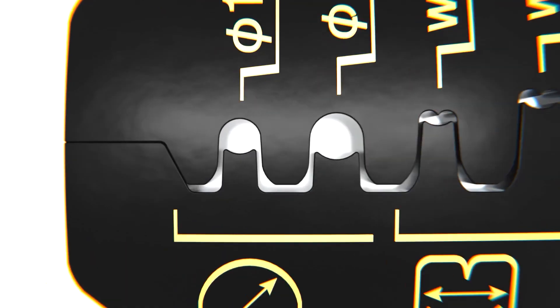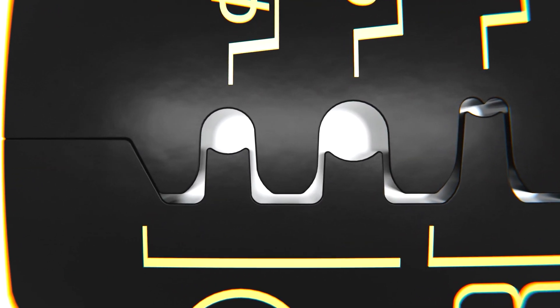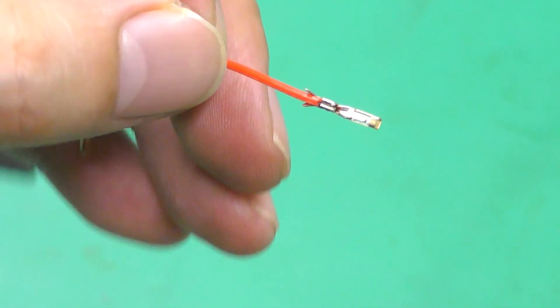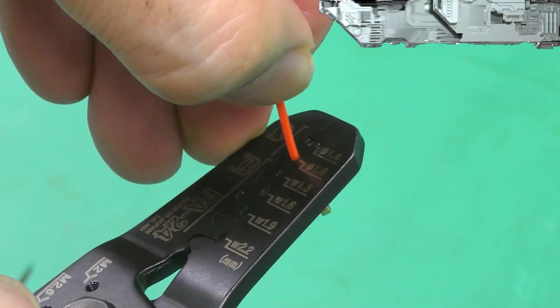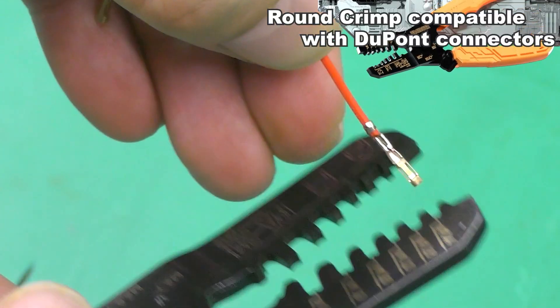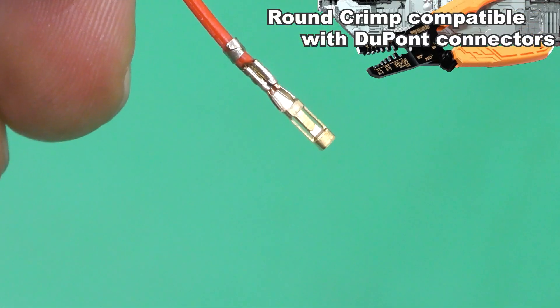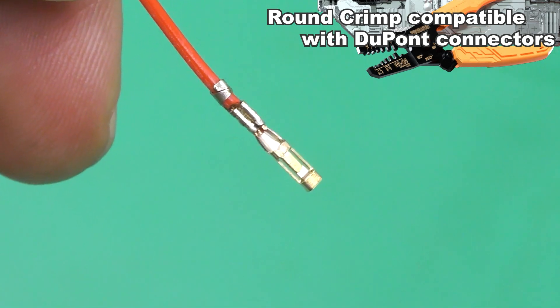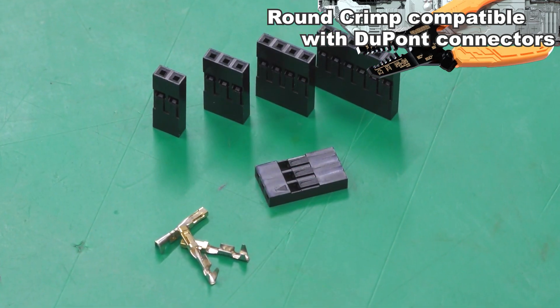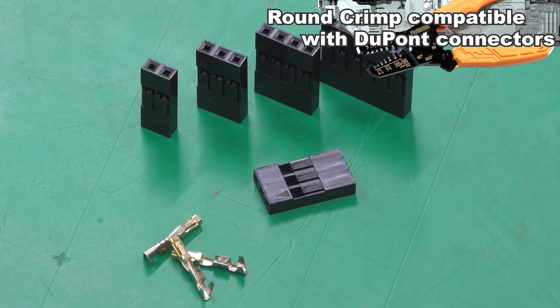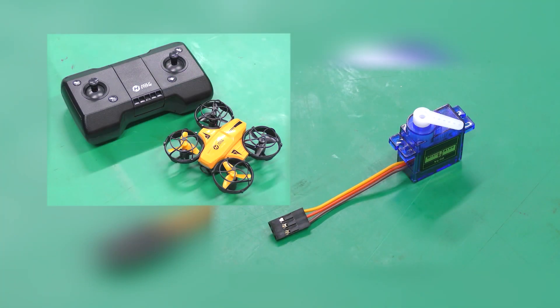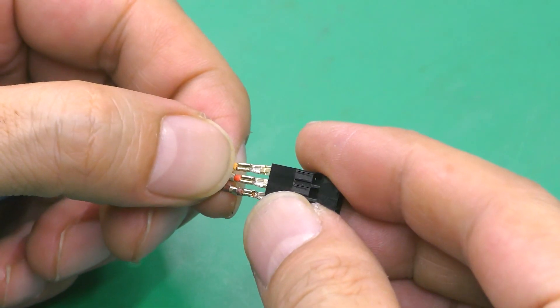The third feature is that round-shaped dies are also mounted, so that DuPont connectors can be crimped. The DuPont connector is a black squared housing that is often used for electronics such as Raspberry Pi and Arduino, also known as servo connector.